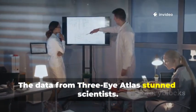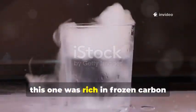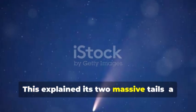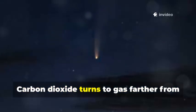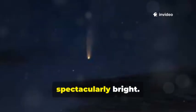The data from 3I Atlas stunned scientists. Unlike our comets, which are mostly water ice, this one was rich in frozen carbon dioxide, dry ice. This explained its two massive tails, a dust tail and an unusually bright ion tail. Carbon dioxide turns to gas farther from the sun, making the comet active early and spectacularly bright.